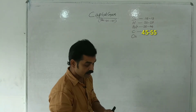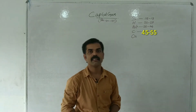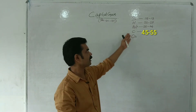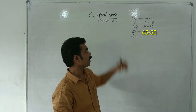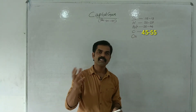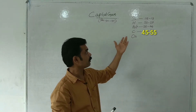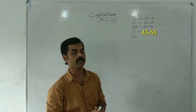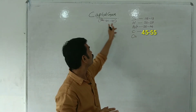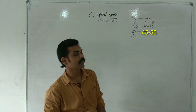Capital Gain is the fourth head of tax. There are five heads total: salary, house property, business or profession, and others. Capital gain is considered one of the most important heads to study.